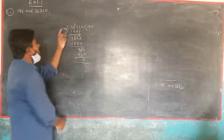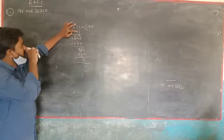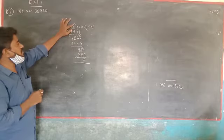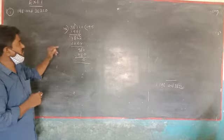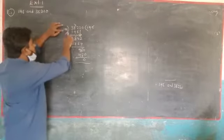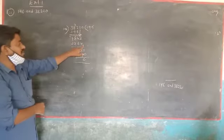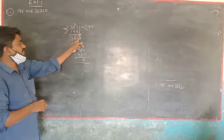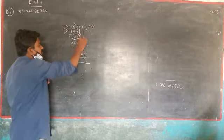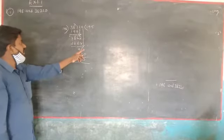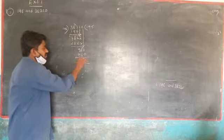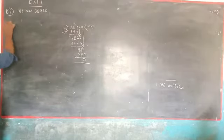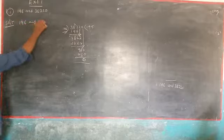Solution: finding the HCF of 38220 and 196. First, 38220 divided by 196 — this goes 195 times. Here, 60 table from 12 gives 6, with 7 remaining; taking borrow gives 17. 90 table from 7 gives 8, remainder 21. Next, 196 goes into the partial dividend; 40 table from 12 gives 8, with 5 remaining; taking borrow gives 15. 60 table from 15 gives 9. Bringing down 0 gives 980. 196 goes into 980 exactly, so remainder is 0.